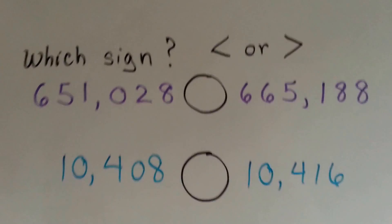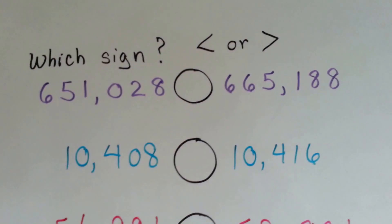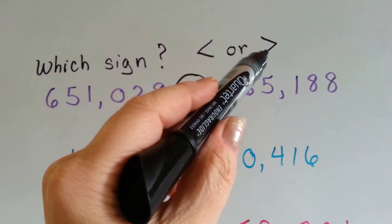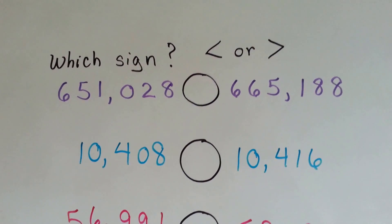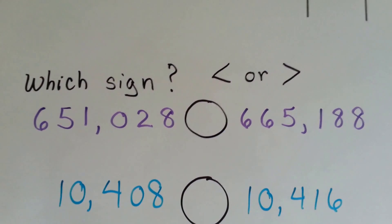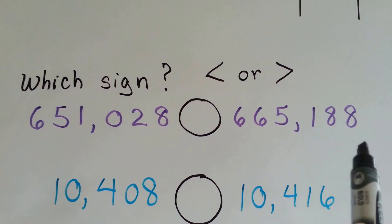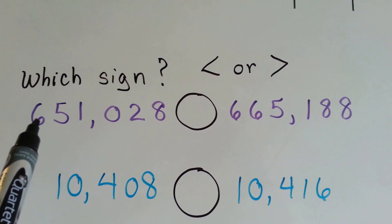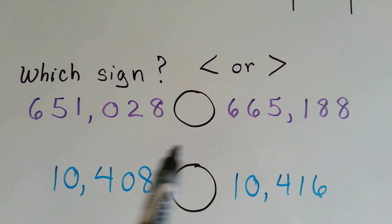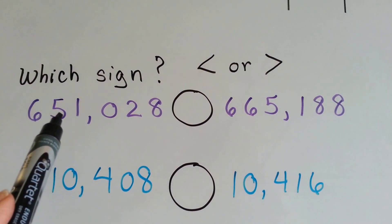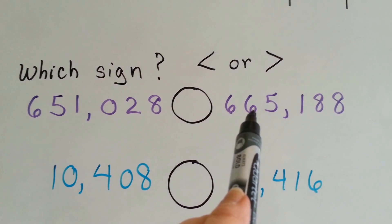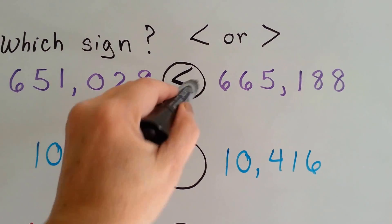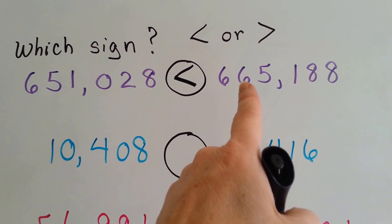Now let's take a look at these. Which one's bigger? We're going to put a less than or greater than sign. Remember: big mouth eats big number, so whichever is the big number, the big mouth is going to face that big number. They both have six place values. Well, we start on the left — both have 600,000. Now we look at the next digit: this has a five in the ten-thousands place, this one has a six in the ten-thousands place. So we're already done — we know this one's bigger. We don't need to go any farther comparing because this one already has more ten-thousands than this one does.